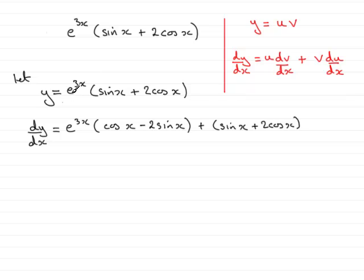Differential of e times a constant times x, e to the ax if you like, is always a e to the ax. So in this particular example, differentiating e to the 3x will be 3e to the 3x. So just close that bracket off there. Okay, all we need to do now is just tidy this up.